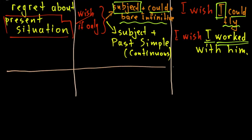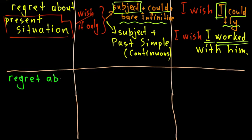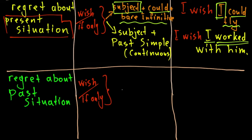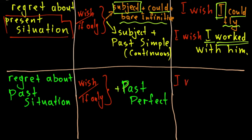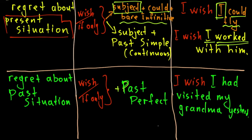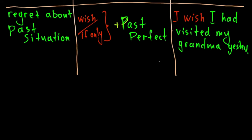What about past situations? Can I use wish sentences when I regret something in the past? Of course. If I regret events in the past that happened or didn't happen, I use 'I wish' or 'if only' + past perfect. There is only one way here. For example: 'I wish I had visited my grandma yesterday.' In reality, yesterday I didn't visit my grandma, and now I regret it.